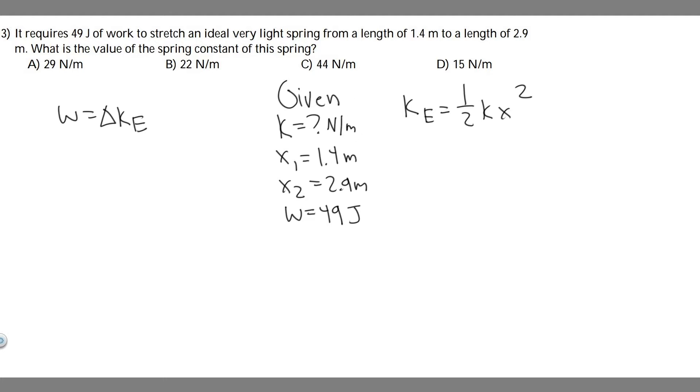Let's keep in mind what we're given. We're given x1, which is basically 1.4 meters, which is the initial length, and then x2, which is the final length, 2.9 meters. And we're also given the work, so we know the work is equal to 49 joules.